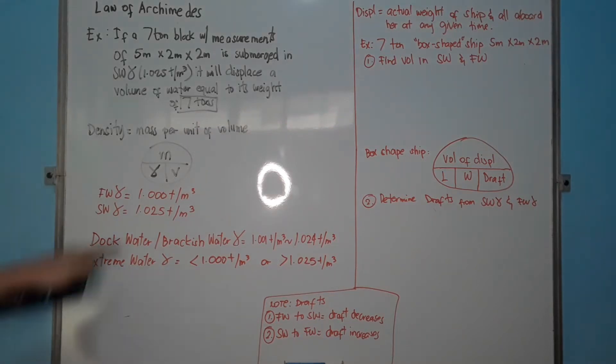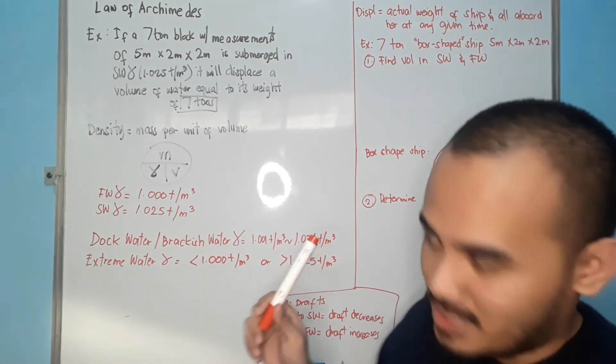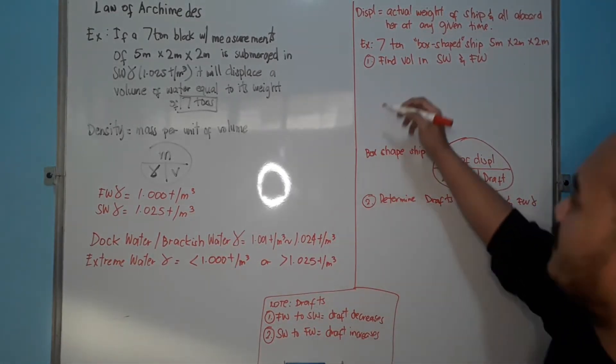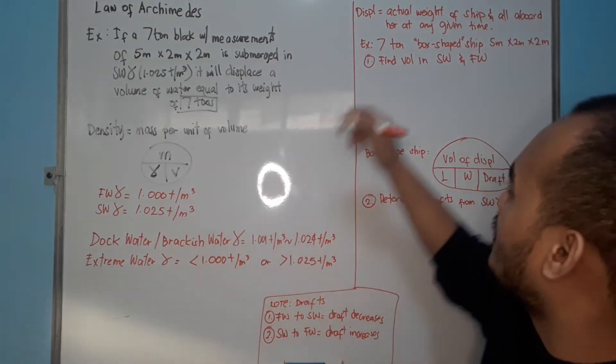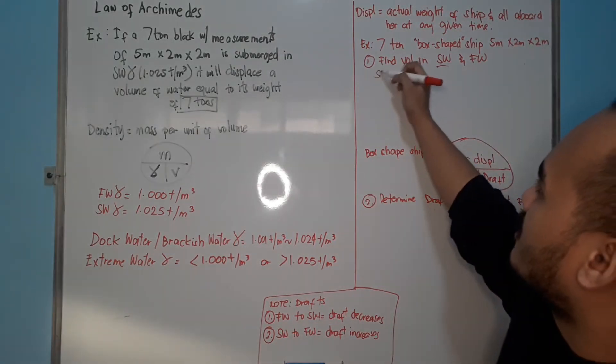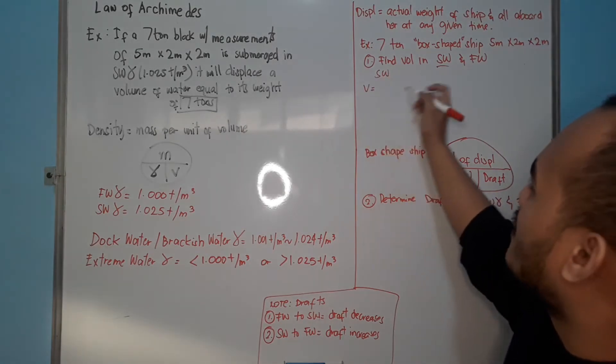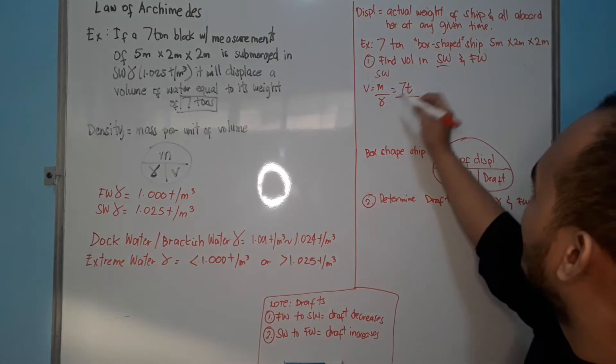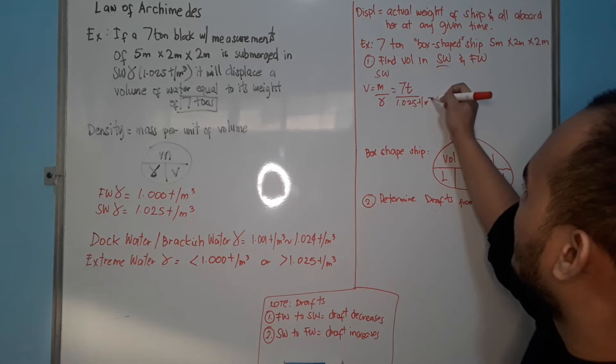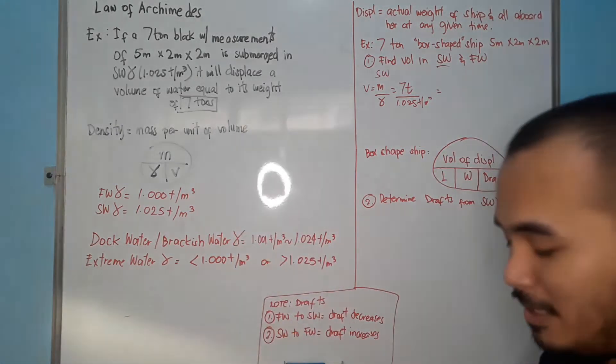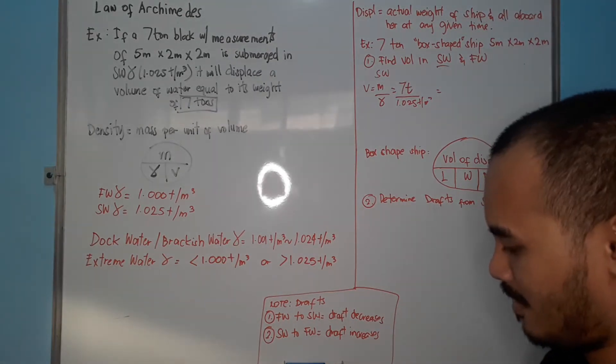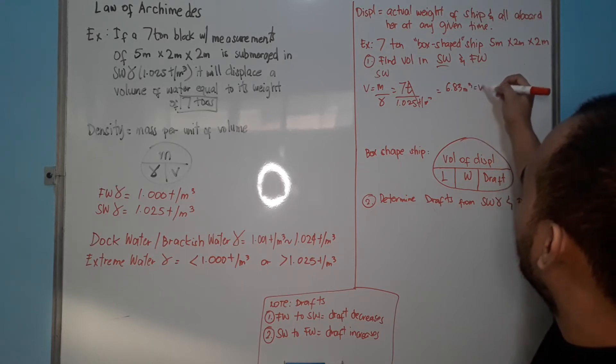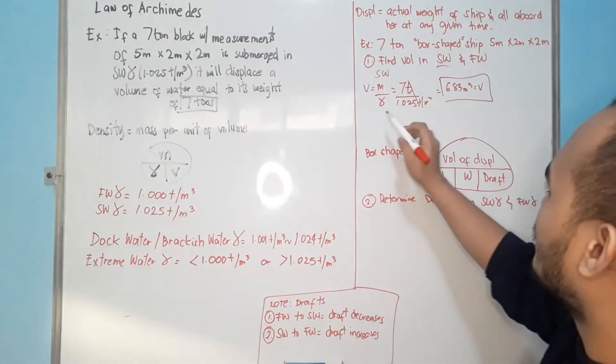Again, from the formula earlier, we want to find the volume. You have the displacement, which is the 7-ton, and you've got your density for salt water and fresh water, which is here. So if we try to solve this by this formula, mass divided by - what's your mass? Let's find first salt water. It says here, salt water volume equals, what's your mass? Mass divided by your density. The mass will be 7 tons. Don't forget the unit. And salt water density, 1.025 tons per cubic meter. So if you have your calculator, 7 divided by 1.025 is 6.83. Cancel cubic meters. This will be your volume for seawater, or salt water.